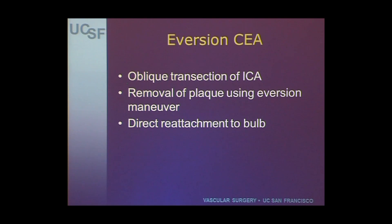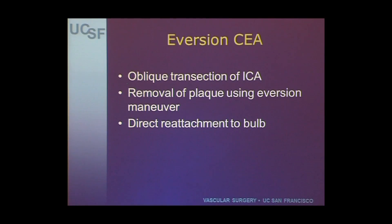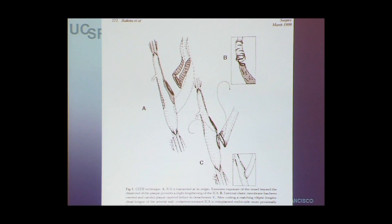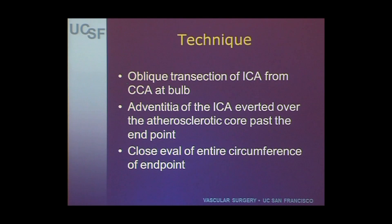The most common carotid endarterectomy being done is what we'll call standard, with a longitudinal arteriotomy and patch. What about an eversion endarterectomy? It's an operation where you aggressively dissect out the carotid, perform an oblique transection of the internal carotid, remove the plaque using an eversion maneuver, and then directly reattach the internal carotid to the bulb. This is a schematic where the artery is divided and the adventitia is averted.